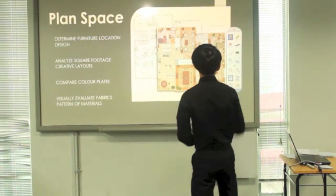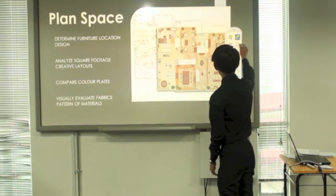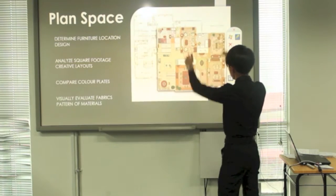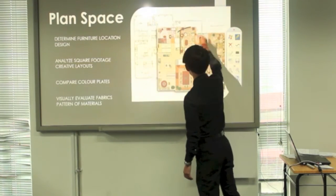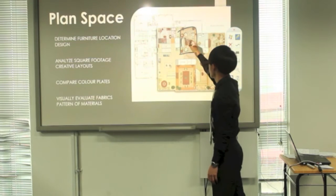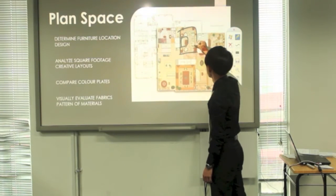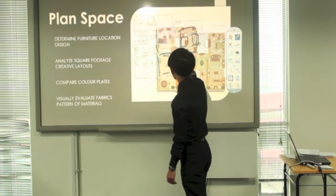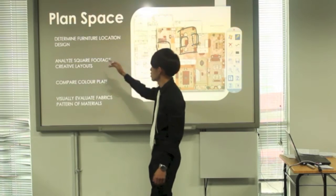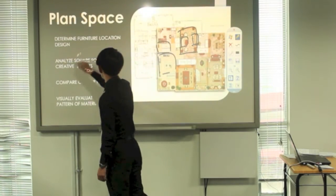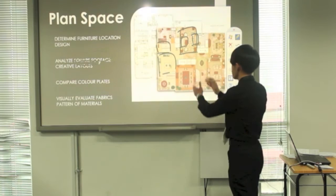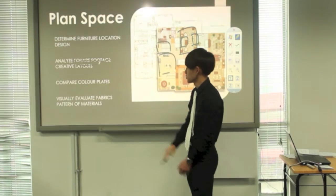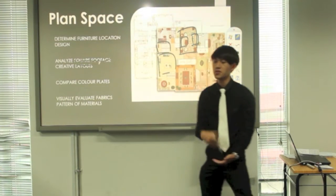After they meet the client and meet the contractor, understand what they need and want, second, they need to plan the space. What is the importance of planning space? The first is to determine the furniture location. For example, this is the plan. Here is the living room. At the living room, we need to have a sofa. In front of the sofa, they need a television. For example, here is the kitchen and here is the toilet. Second, we need to analyze the square footage. Third is to compare the color plates. Fourth is to visualize the fabric pattern and materials.